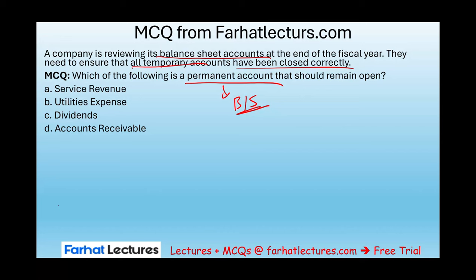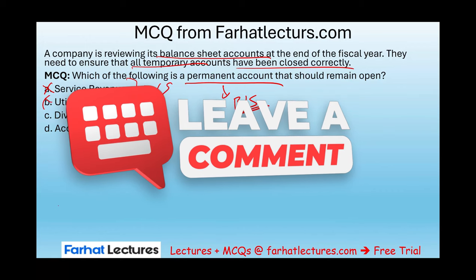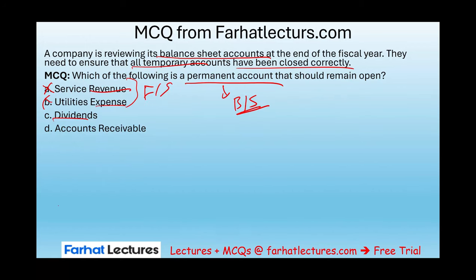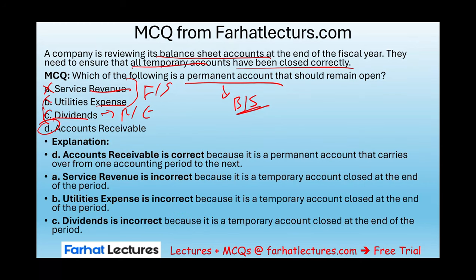The shortcut: any account on the balance sheet is a permanent account. Revenues — not a balance sheet account, out. Utilities expense — not a balance sheet account, out. Dividends — not a balance sheet account, out. Accounts receivable — by process of elimination, yes. It is an asset, a balance sheet account, and a permanent account that should remain open. Go to farhatlectures.com for additional MCQs to help whether you are a financial accounting student, CPA exam candidate, or CMA exam candidate. Good luck, study hard, and stay safe.